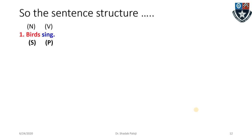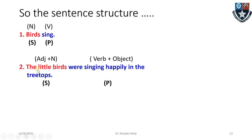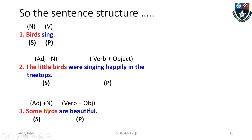To summarize sentence structure: 'Birds sing' — subject (noun) + predicate (verb). 'The little birds were singing happily in the treetops' — subject is adjective plus noun; predicate includes verb plus object. 'Some birds are beautiful' — subject is adjective plus noun; predicate is verb plus complement. This is the noun-verb, subject-predicate structure.